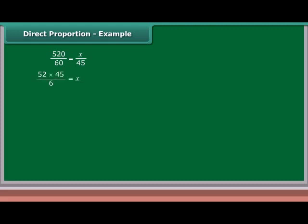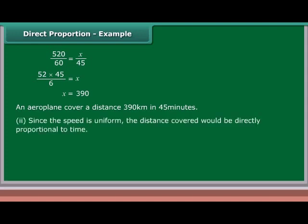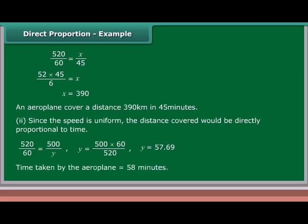Solving: (52 × 45)/6 = X, therefore X = 390. The airplane covers a distance of 390 kilometers in 45 minutes. For the second part, since speed is uniform, 520/60 = 500/Y, so Y = (500 × 60)/520 = 57.69, approximately 58 minutes. Time taken by the airplane is 58 minutes.